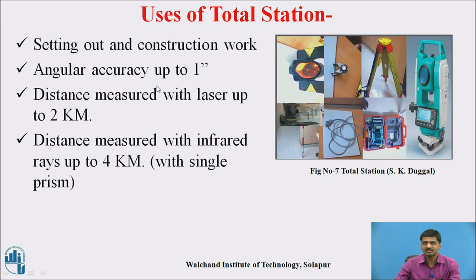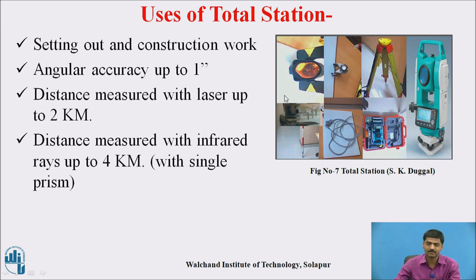Setting out and construction work — to prepare a layout for your building, it may be industrial building or commercial building, for setting out we are using Total Station. Similarly for any type of construction — it may be residential, industrial, commercial, government project — multitasking projects are there. We are using Total Station nowadays. Angular accuracy is up to 1 second. Distance measured with laser up to near about 2 kilometers. Distance measured with infrared rays up to 4 kilometers with a single prism.